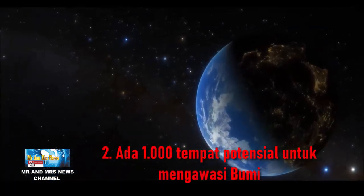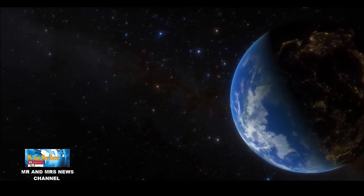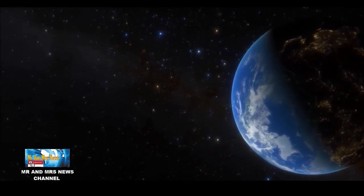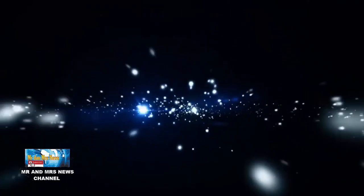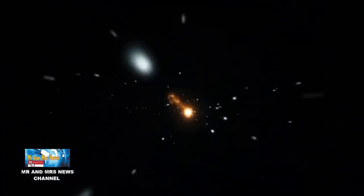Yang kedua, seribu tempat potensial untuk mengawasi bumi. Pada bulan Oktober, peneliti menemukan katalog 1004 bintang terdekat yang memiliki posisi terbaik untuk mendeteksi kehidupan di bumi. Jika pengamat di luar sana mencari dari planet yang mengorbit bintang-bintang ini, mereka akan dapat melihat tanda-tanda biosfer di atmosfer kita.